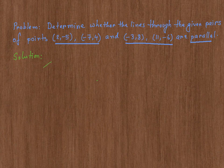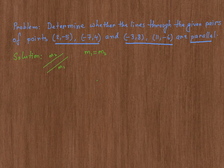If two straight lines are parallel to each other — let's say these two lines are parallel, and I call the slope of this line M1 and the slope of this line M2 — then their slopes must be equal to each other. That means two straight lines are parallel only if their slopes are equal. Conversely, if the slopes of two straight lines are the same, then the lines must be parallel. That means it goes in both directions.